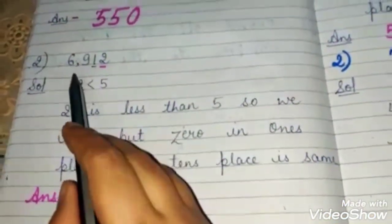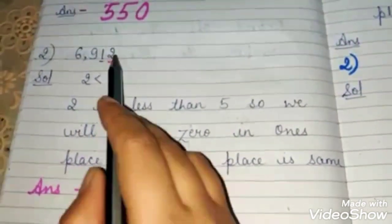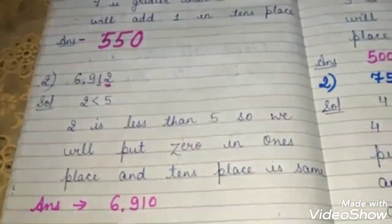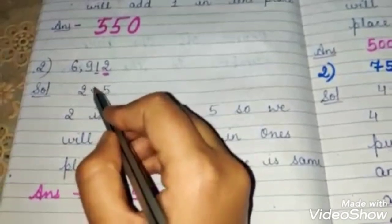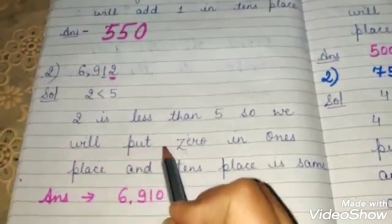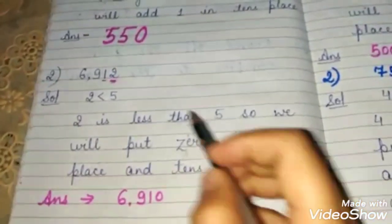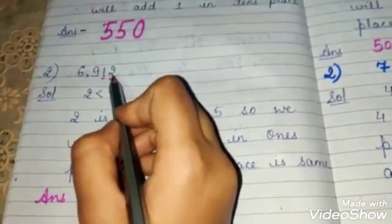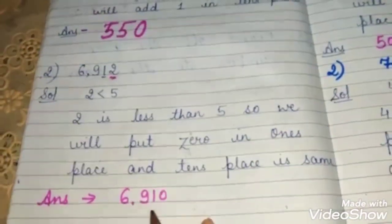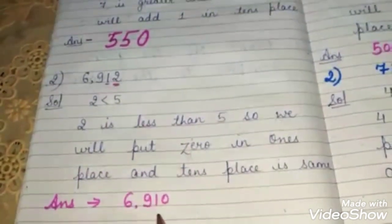The next question is 6,912. Again, to round off to the nearest 10, you check the digit in the 1's place. In the 1's place, 2 is there. Since 2 is smaller than 5, we put 0 in the 1's place and keep the 10's place the same. All other digits remain as they are. So 6,912 rounded off to the nearest 10 is 6,910.